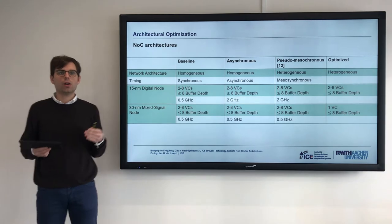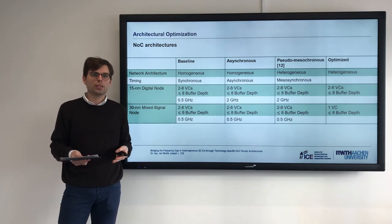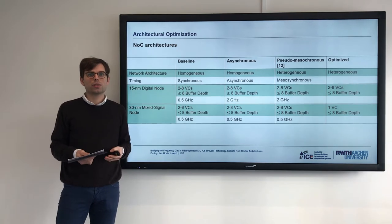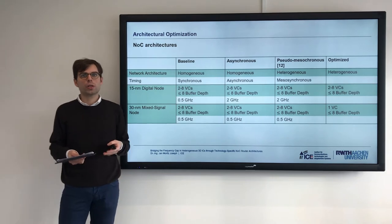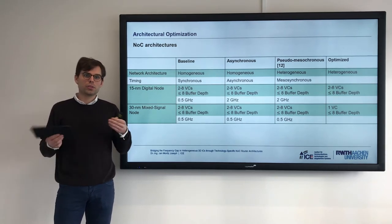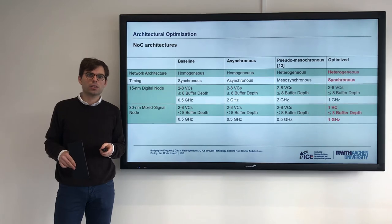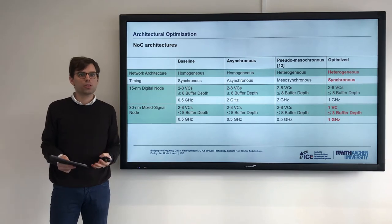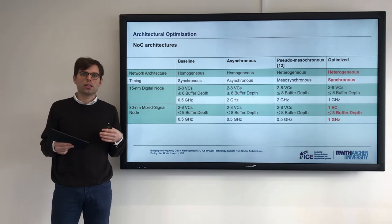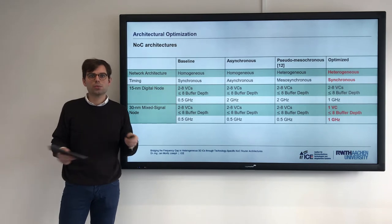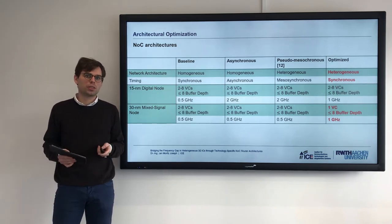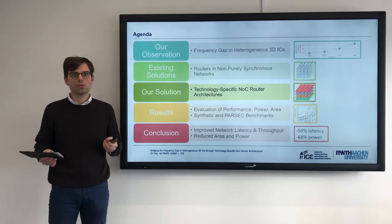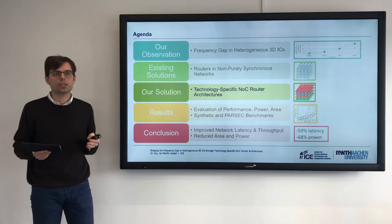Finally, our optimized design uses an actual heterogeneous architecture in terms of number of VCs: routers with VCs in the digital node where clock frequencies can get high, and a VC-less router in the mixed-signal node. By doing this, we achieve a synchronous design clocking at the fastest possible speed of the mixed-signal routers — 1GHz. This is really nice because we can use a synchronous design through a heterogeneous architecture. This is our solution: technology-specific NOC router architectures.